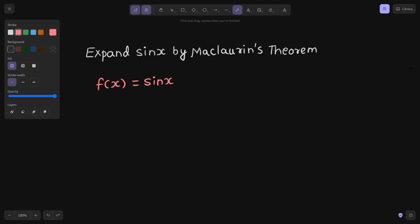What is your next step? We will differentiate f(x) at least 3 to 4 times. So if I find the first derivative of sine x, that is cos x. If I find the second derivative, just differentiate cos x, that is negative sine x.